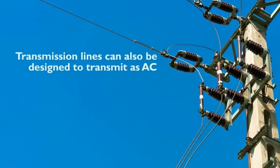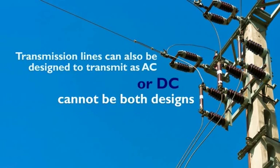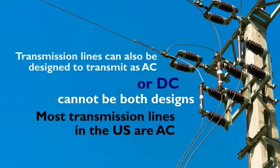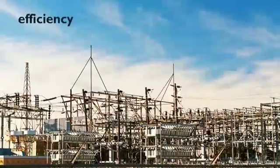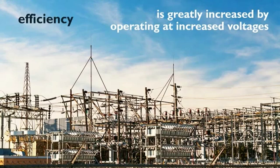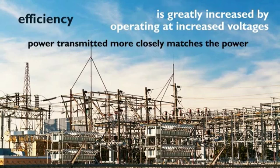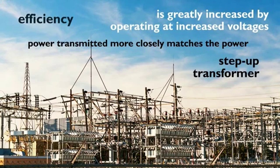Transmission lines can also be designed to transmit as AC alternating current or DC direct current. However, they cannot be both designs. Most transmission lines in the U.S. are AC. The efficiency of electric power transmission is greatly increased by operating at increased voltages. As a result, the current in the conductors is reduced and the power transmitted more closely matches the power input supplied to the transmission line. This increase in voltage is provided by a step-up transformer.